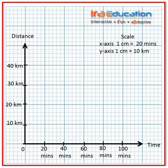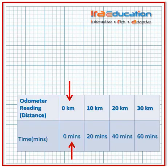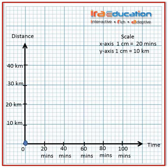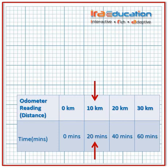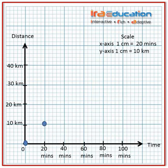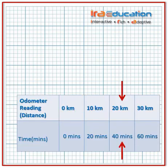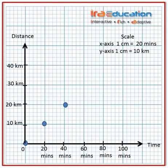The first point is plotted at 0 minutes on the x-axis and 0 kilometers on the y-axis. The second point is plotted at 20 minutes on the x-axis and 10 kilometers on the y-axis. The third point is plotted at 40 minutes on the x-axis and 20 kilometers on the y-axis. The fourth and final point is plotted at 60 minutes on the x-axis and 30 kilometers on the y-axis.